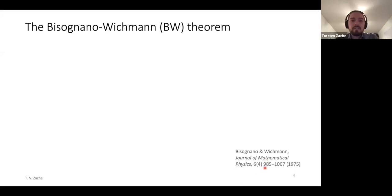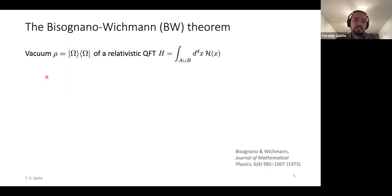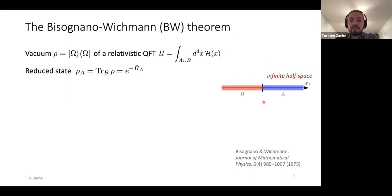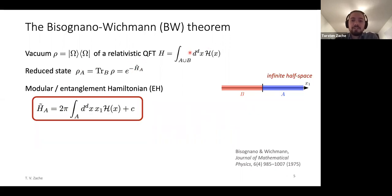There's a famous theorem from local quantum field theory from the seventies — the Bisognano-Wichmann theorem — which states the following: given the vacuum state of a relativistic quantum field theory described by some Hamiltonian and its density, and a particular cut of space into two infinite half-spaces — say, considering only the subsystem A defined by positive x₁ — then the reduced state has an entanglement Hamiltonian that is related to the original Hamiltonian density in a very simple way. Namely, it's the same one, but deformed by a prefactor that rises linearly as you go away from the entanglement cut, plus a constant for normalization.